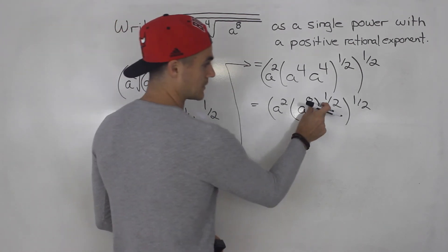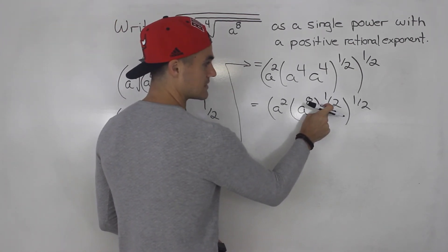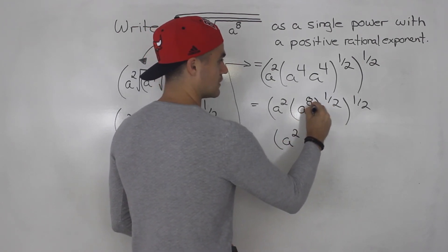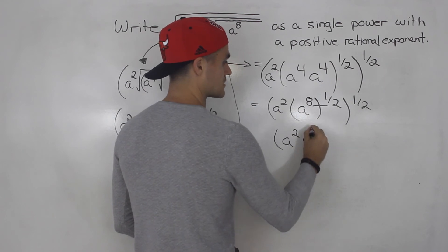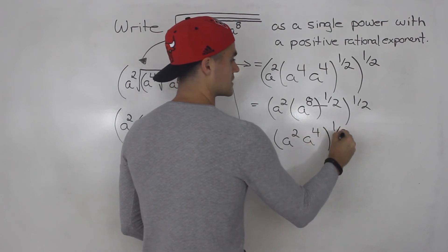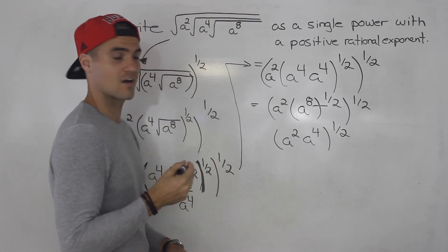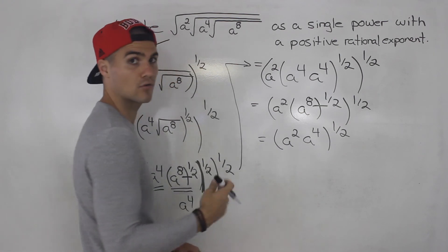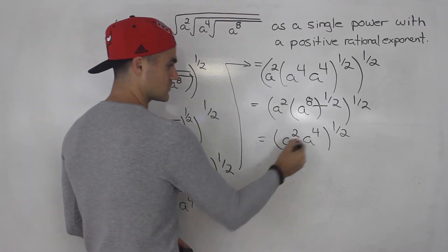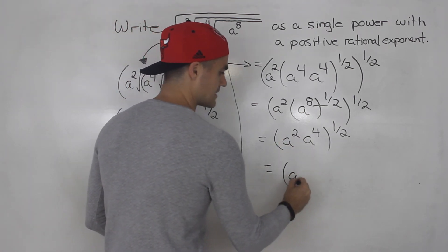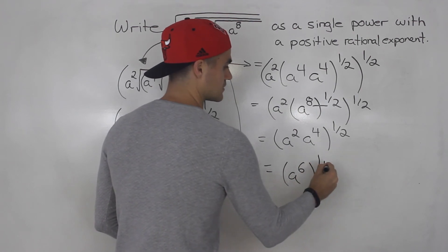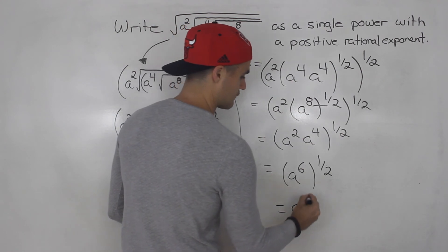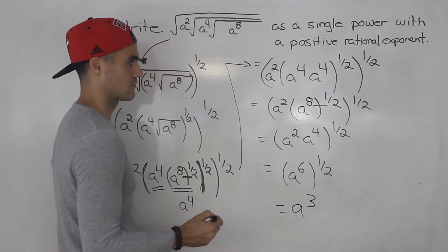From here, taking 8 multiplied by a half gives us 4, so we'll have a to the power of 4. Then combining with a to the power of 2 gives a to the power of 6, still all to the power of a half. That finally simplifies to a to the power of 3.